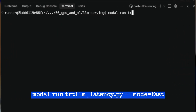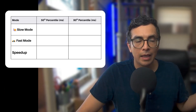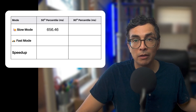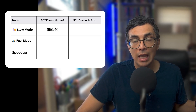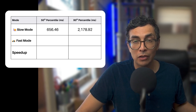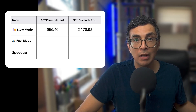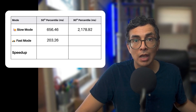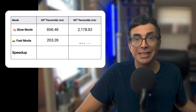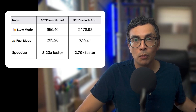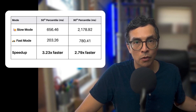Now let's try fast mode. This will apply all of our optimizations — same prompts, but now powered by an optimized TensorRT LLM engine. Here's how they compare. In slow mode, the 50th percentile comes in at about 660 milliseconds, and the 90th percentile jumps to about 2,180 milliseconds. In fast mode, however, the 50th percentile drops to 200 milliseconds and the 90th percentile drops to 780 milliseconds. That's about a 3x speedup, which makes the experience feel much more fluid and responsive to users.